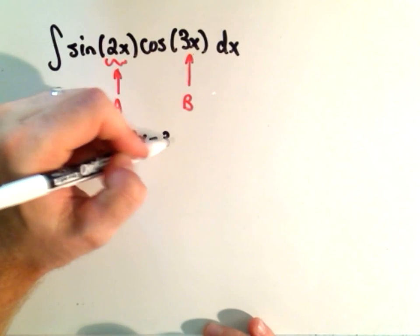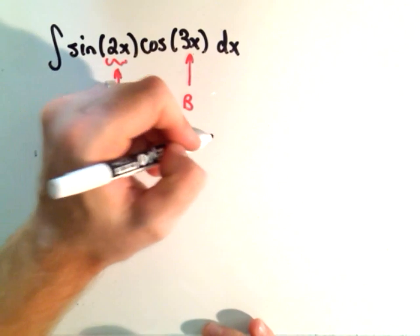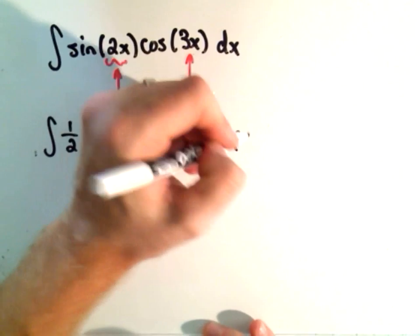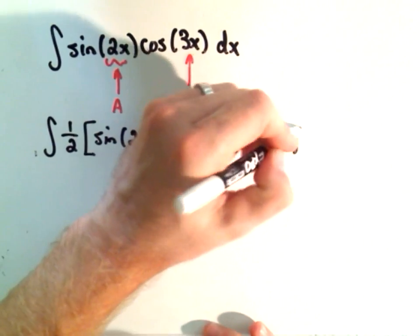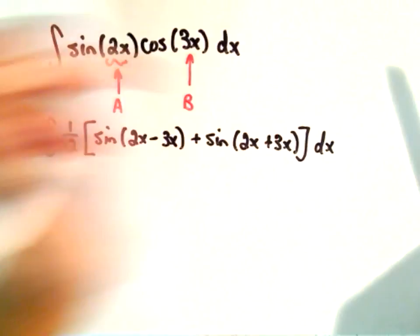plus sine of a, which is 2x, plus b, dx.